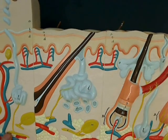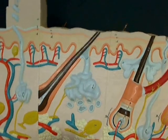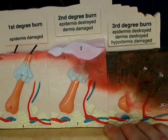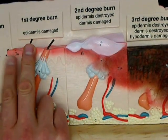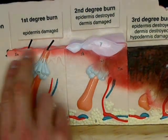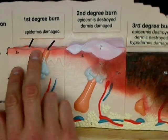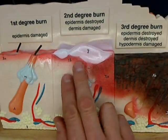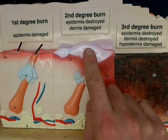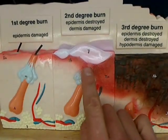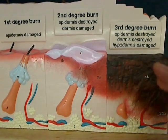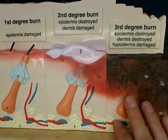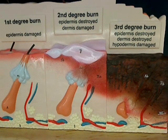If I flip the model over, we've got the degrees of burn. All the way on this end we've got first degree burn — just the epidermis is affected. On this part of the model we've got second degree burn; you can see blistering here, the epidermis is destroyed and the dermis is affected. And then on the last one we see third degree burn — a blackening of the skin. The epidermis is destroyed, the dermis is destroyed, and we're affecting the subcutaneous tissues.